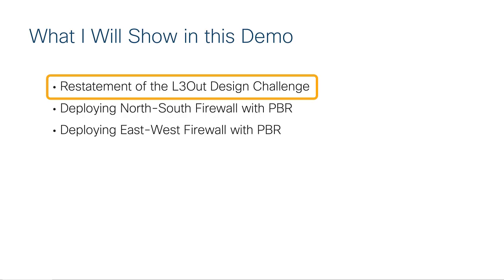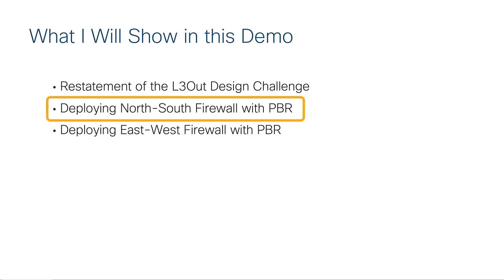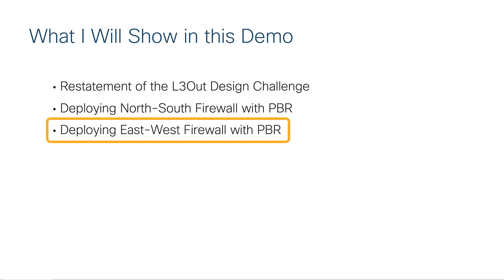Once we define or understand what the challenge is, I want to show you how I might solve that challenge. My first demonstration example, I'm going to be deploying a north-south firewall, using a feature called policy-based redirect or PBR in order to get traffic through the firewall. Then I'll show you another example deploying an east-west firewall, or EPG to EPG firewall, and again using PBR. I'll show you what that looks like in MSO.